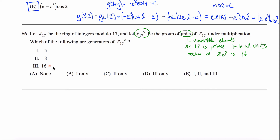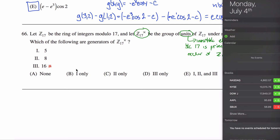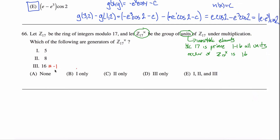If you recognize that 16 is equivalent to negative 1 mod 17 — negative 1 times negative 1 is positive 1 — so 16 has order 2, not order 16. Therefore, 16 is not a generator of the group. That tells me two of the answer choices are already eliminated.